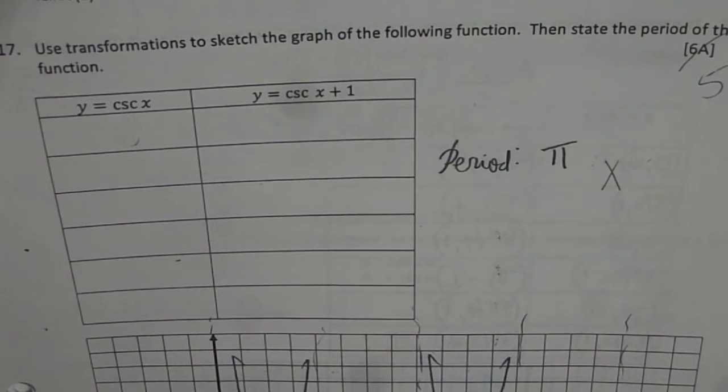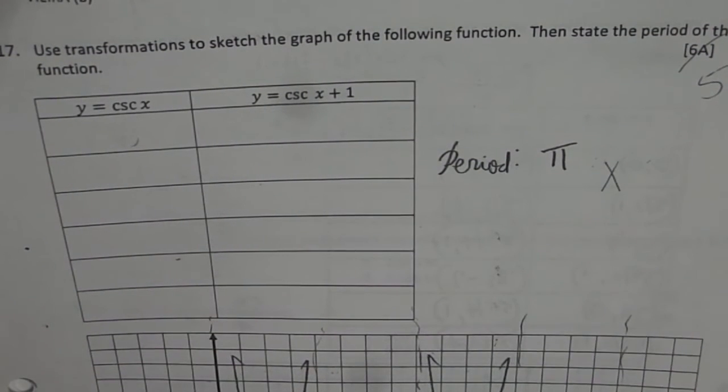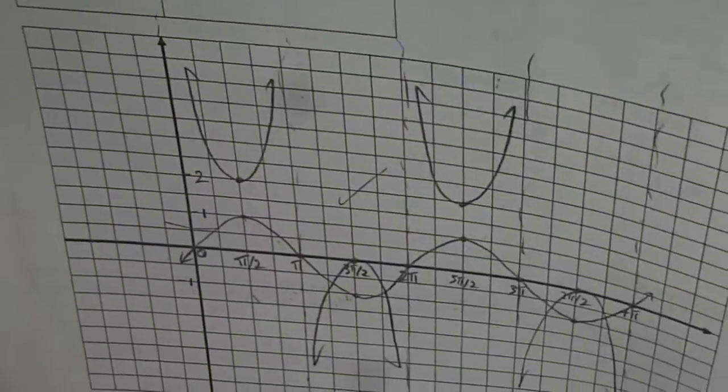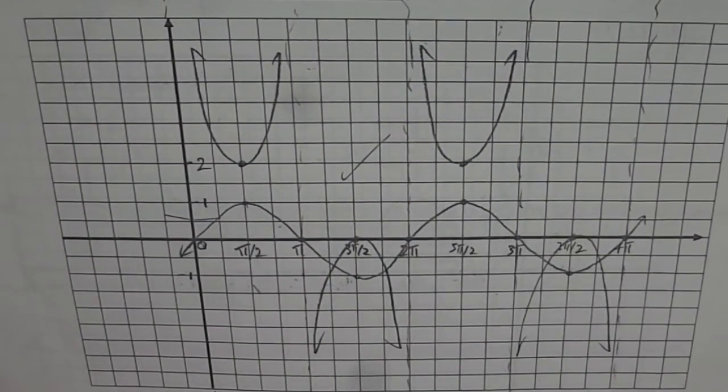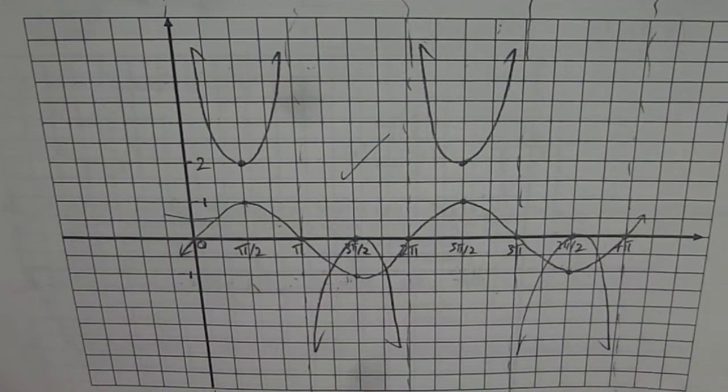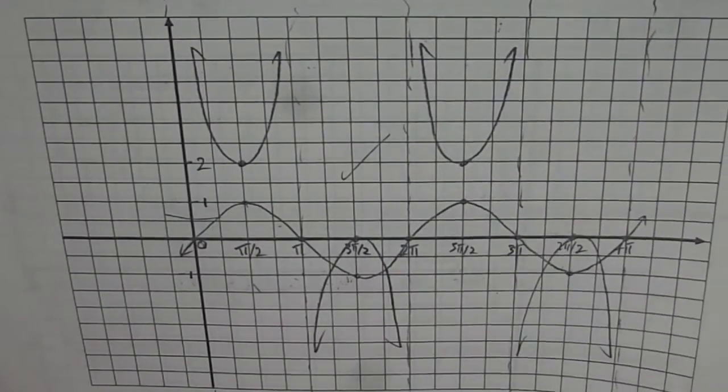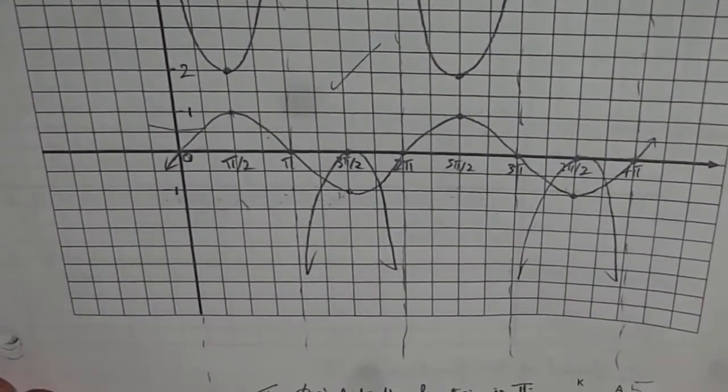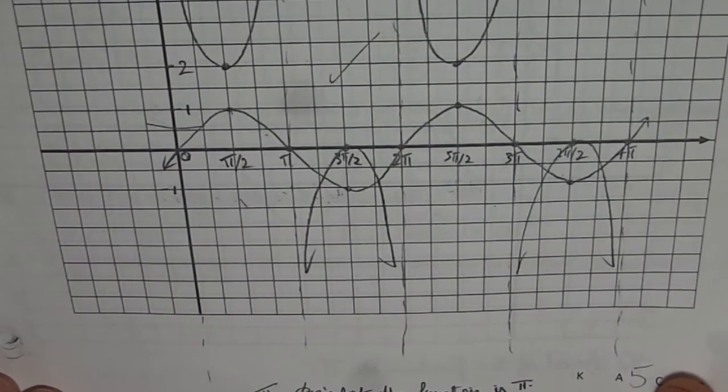For sketching the graph of cosecant x, first you should sketch the graph of sine x as done here. And then you should actually reflect, do the reciprocal of sine x. Once you do reciprocal of sine x, then translate one unit up. In that case, you'll get the right answer. So that is how you're going to get the graph.